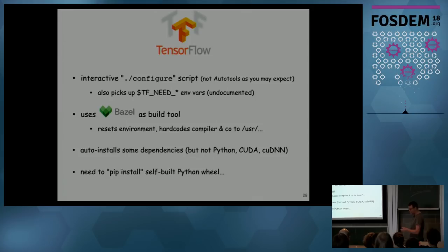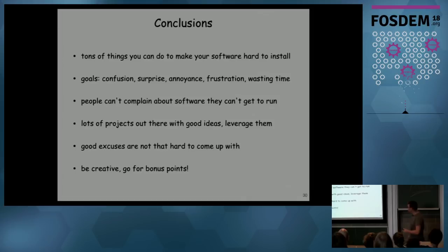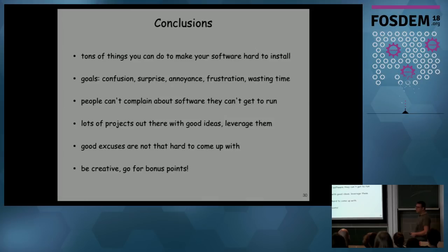So, conclusions: there are tons of things you can do to make your software hard to install. Try to confuse people, surprise them, annoy them, frustrate them, waste their time — and hopefully they will give up before ever getting to using your software. Then they can't complain, they can't ask for more features because they don't know what it already supports. Lots of projects out there are doing good things — try to leverage those examples. Good excuses aren't hard to come up with. Be creative — don't just stick to what I showed you, build on it. Thanks!